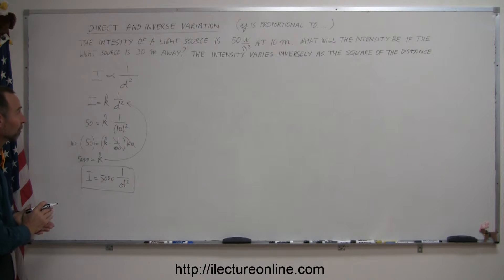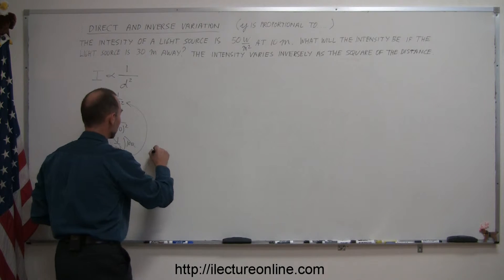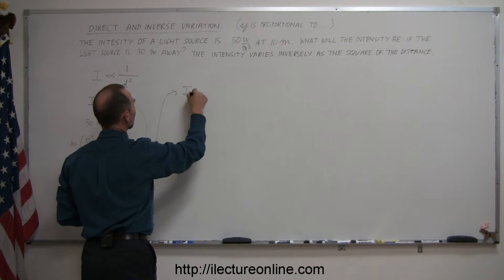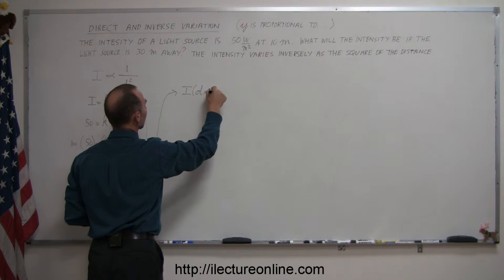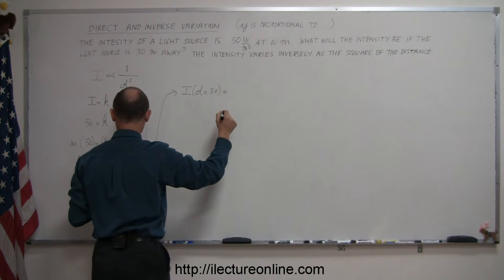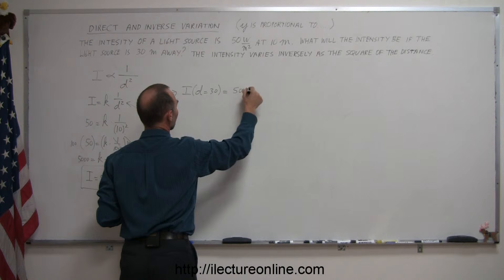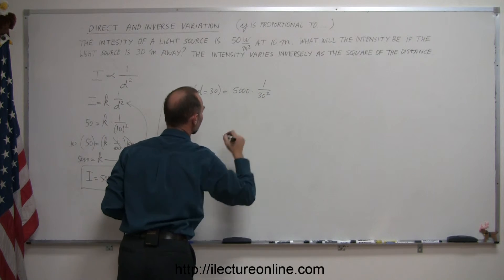Now we can use that equation to figure out the second part of the problem, where they want us to find out what the intensity will be when the source is 30 meters away. So then we write the intensity when d is equal to 30 meters is equal to 5000 times 1 over 30 squared.